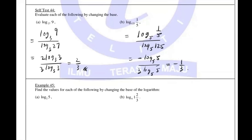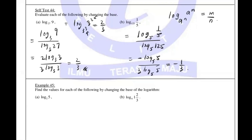Actually, there's a shortcut for this. If you have log base a^m of b^m, the answer is always m over m — the powers cancel. For example, log base 3^3 of 3^2 gives answer 2 over 3. You just look at the powers directly.